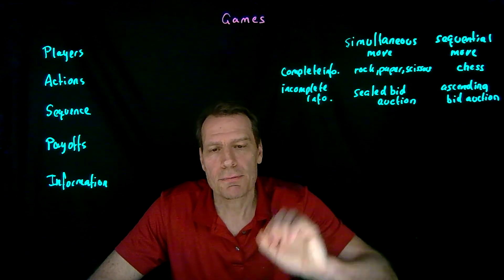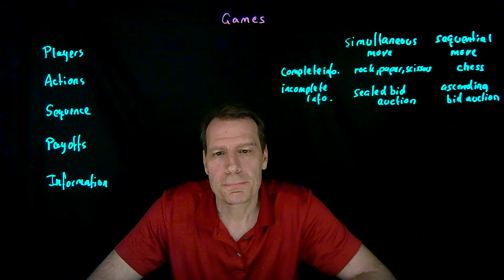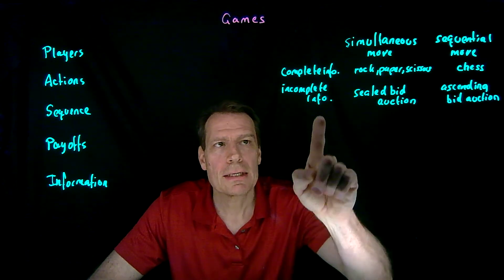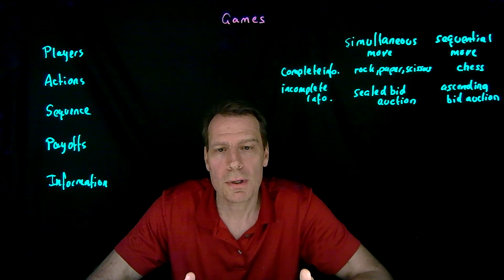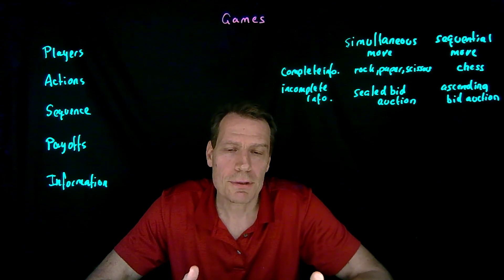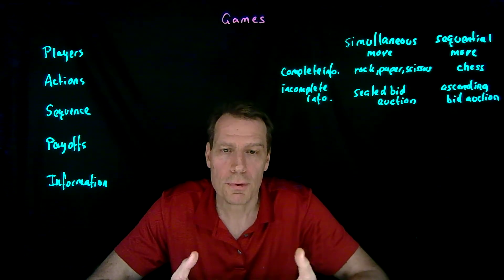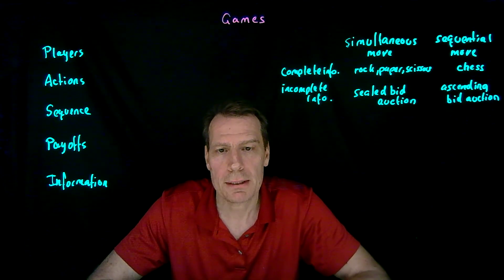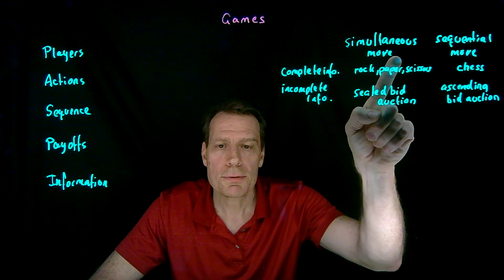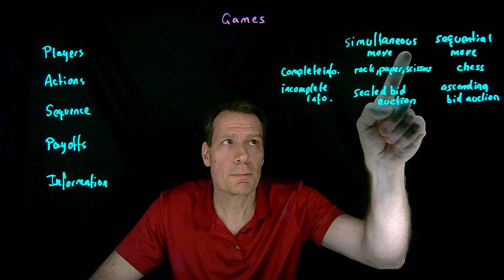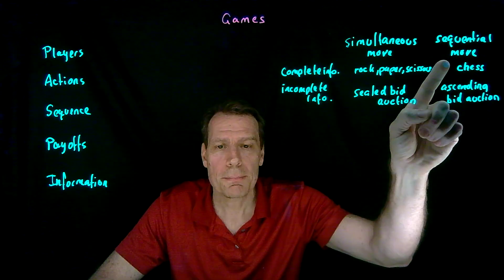So these are the basic kinds of games — simultaneous move, sequential move, complete information, and incomplete information — that game theorists think about. Now, in this class, we're not going to think about incomplete information games where you don't know what the payoffs mean to other people and have to form beliefs about it. We're going to focus on complete information games, where everybody understands what the payoffs are both for themselves and for other people. We'll leave incomplete information to a future game theory class. But we are going to talk about both simultaneous move games and sequential move games.